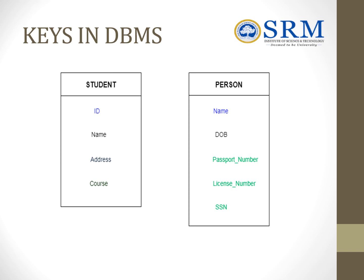Here we have a student database and one more database called the person database. In the student database, I have attributes: ID, name, address, and course. Here, ID is unique for each and every student, so it should be the key.